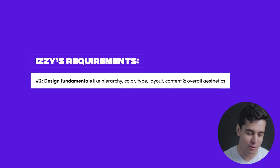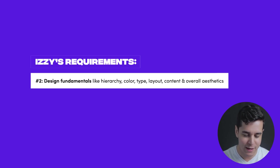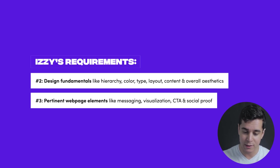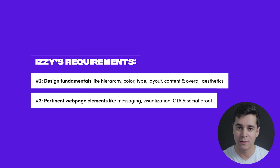The second thing I was looking at was the design fundamentals. You've got hierarchy, color, type, layout, content, and overall aesthetics. And then the third thing was, does it have all the pertinent elements of a web page? So messaging — does the headline explain what value the business delivers, sub headline, that kind of thing. Visualization, calls to action, and then social proof. So three things: the brief, design fundamentals, and then pertinent elements. Knowing the criteria, let's jump into the top five submissions from our Flux students.